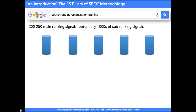Each and every one of these ranking signals you can place onto one of five pillars. Let's take a look at each and every one of these five pillars, and we'll take a closer look at all five pillars throughout the training.